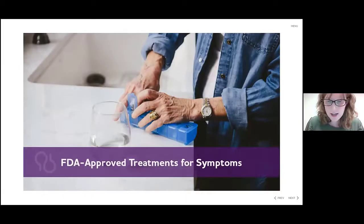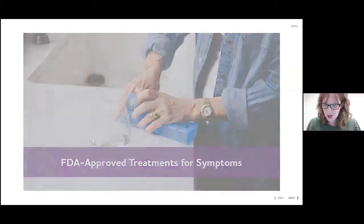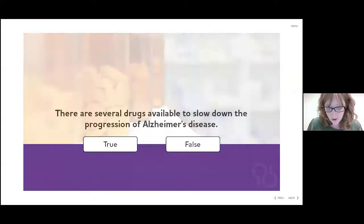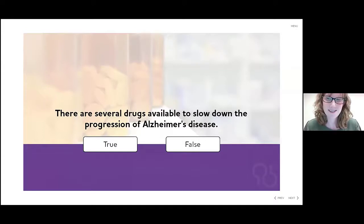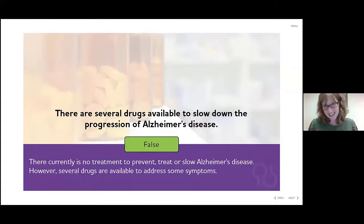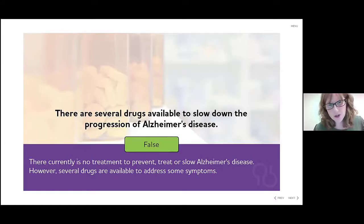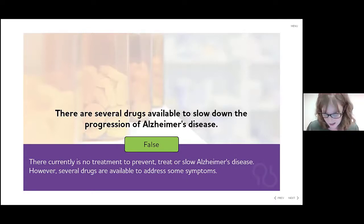The next thing we're going to look at is FDA-approved treatments for symptoms. True or false: there are several drugs available to slow down the progression of Alzheimer's disease? The answer is false. There is nothing currently that can prevent, treat, or slow Alzheimer's disease. However, there are some drugs that can address the symptoms of the disease.